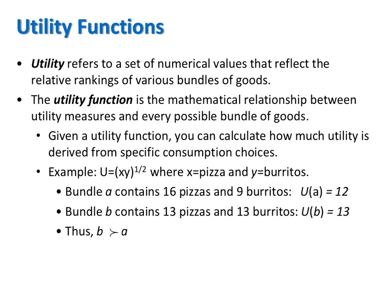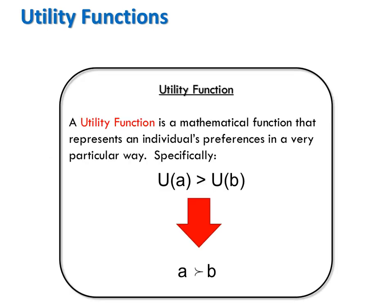Now, alone that doesn't tell us anything. But if we have a second bundle to which we can compare the first, then the utils become more meaningful. Say bundle B has 13 pizzas and 13 burritos. Plugging in x equals 13 and y equals 13 gives us a utility of 13 utils. Now we can say that since 13 is a greater number than 12, bundle B is strictly preferred to bundle A.